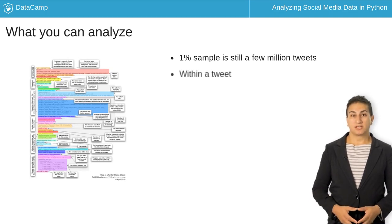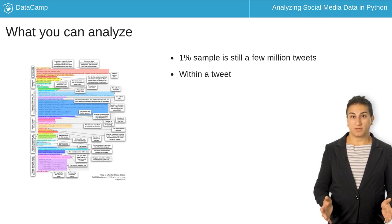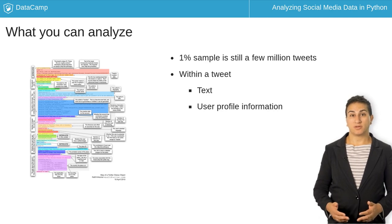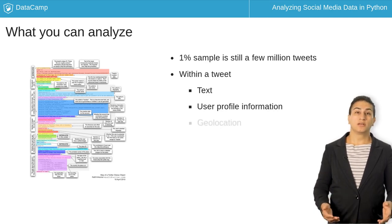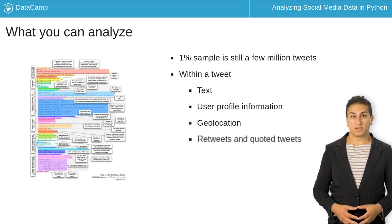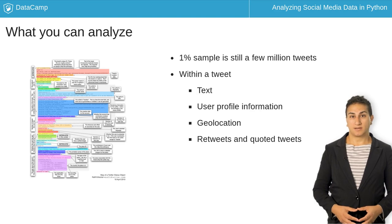In each of those tweets, you get a lot of information: the text of the tweet, user profile information like the number of followers and followees the user has, geolocation, and other extras. You also get all of that information for retweets and quoted tweets. We'll get into how to access all of that information in a second.